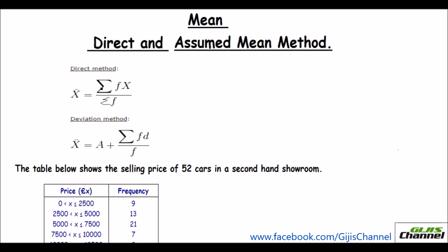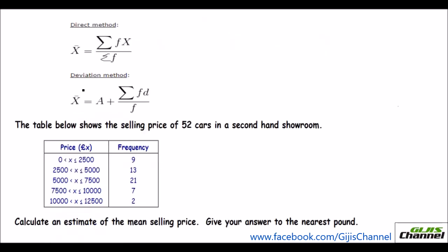Sigma is the sum. The sum of the product of fx over the sum of the frequency will give you the mean value. This is the direct method. In the deviation method, or indirect method, or assumed mean method, you take one value from the data as your assumed mean, then find the deviation and use that formula to do the calculation.